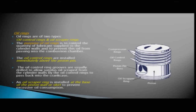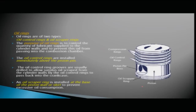The oil control rings are installed immediately above the piston pin. The ring grooves are usually drilled to allow surplus oil scraped from the cylinder walls to pass back into the crankcase. The oil scraper ring is installed at the base of the piston skirt to prevent excessive oil consumption.